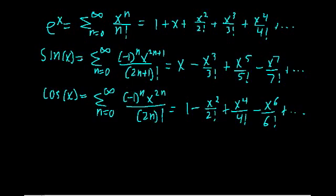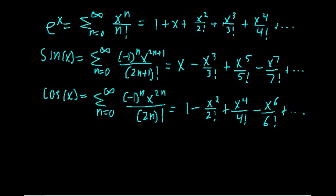Welcome back. We've spent the past couple of videos finding Taylor series expansions for functions like e to the x, sine x, and cosine x, and we found that they can be represented with these infinitely long polynomials. You may still have trouble thinking that this really long infinite polynomial actually is the function e to the x. That's what we're going to do in this video — really stress that these two are indeed equal. We can say this Taylor series converges to e to the x, or that e to the x is represented by this Taylor series.